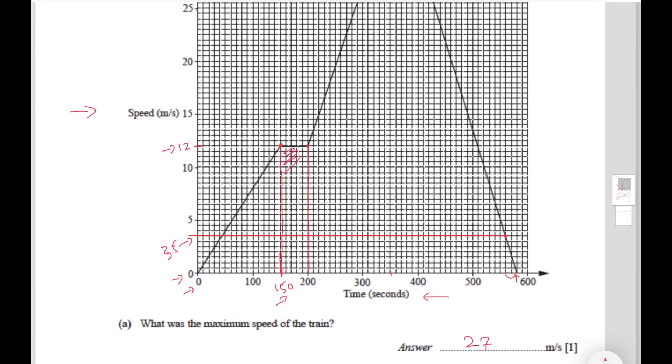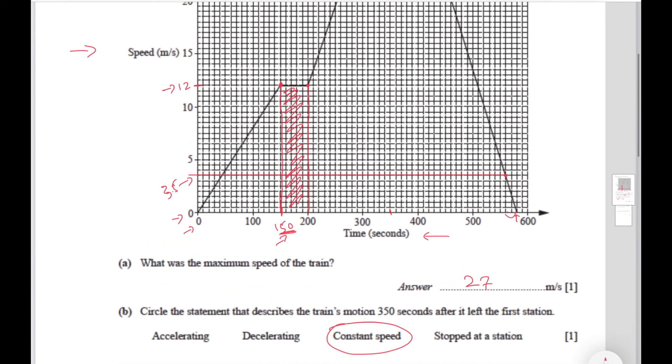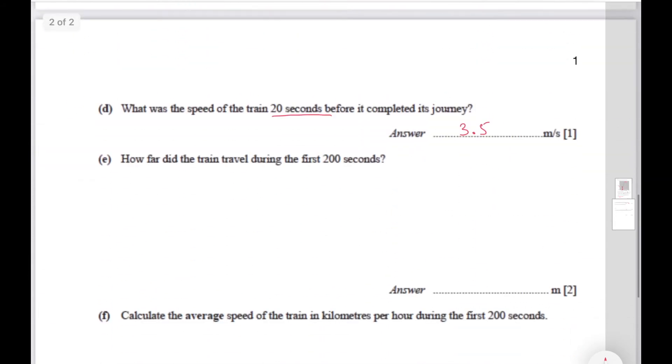So for this rectangle over here, how do we find the area of this rectangle? You do 200 minus 150 which gives us 50, and the height is 12. So you multiply, for just the rectangle you multiply 50 times 12.